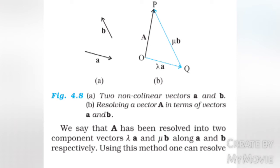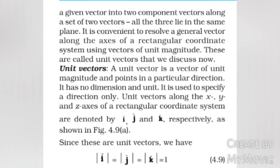Two non-collinear vectors, vector A and vector B. Resolving vector E in terms of vectors A and B, we say that vector E has been resolved into two component vectors λA and μB along A and B respectively. Using this method, one can resolve a given vector into two component vectors along a set of two vectors, provided all three lie in the same plane.